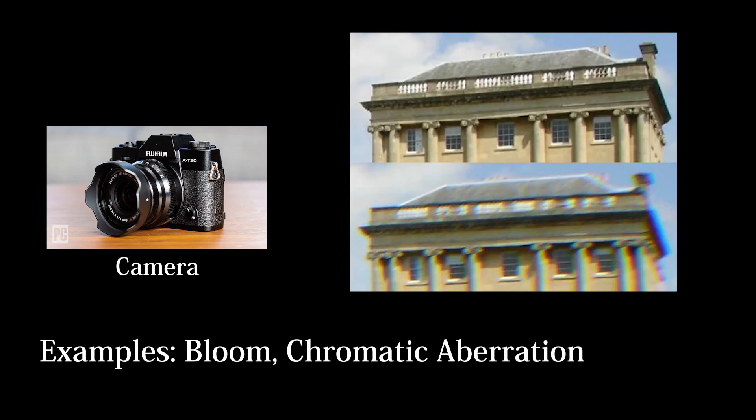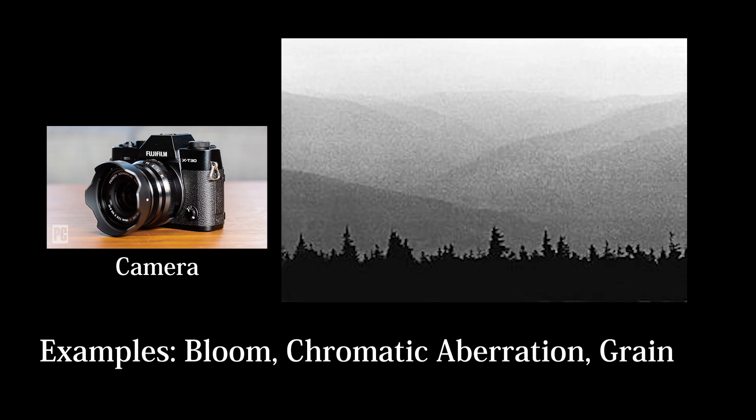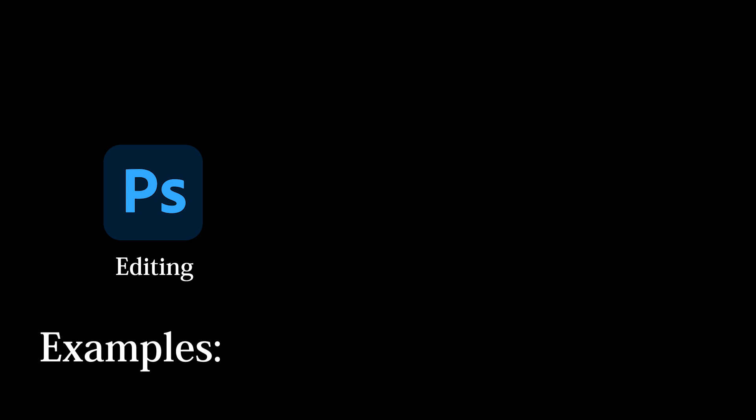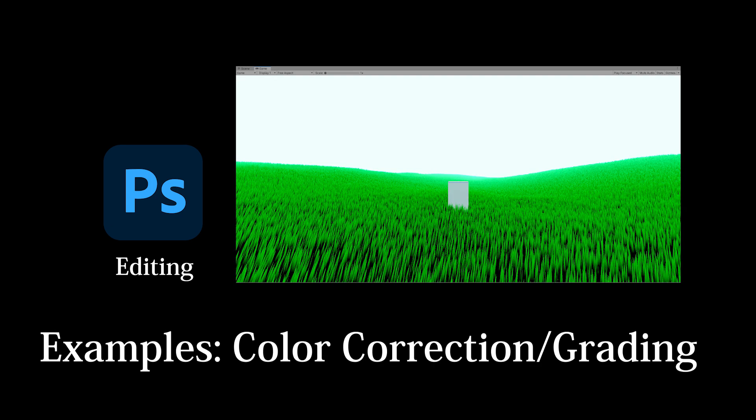Next comes post-processing effects that simulate camera properties, such as bloom, chromatic aberration, or film grain. Lastly comes effects that are most commonly referred to as post-processing effects, such as color correction.